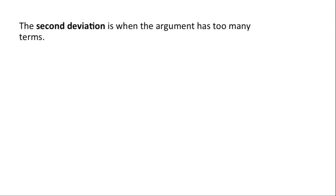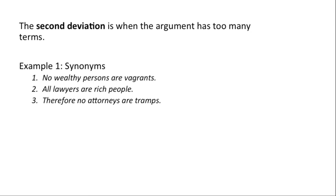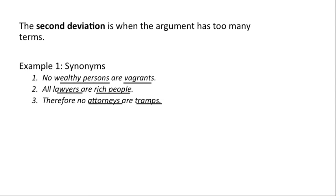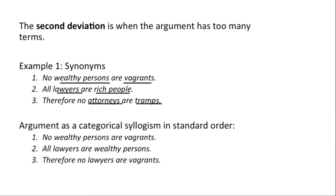The second deviation is when the argument has too many terms. A first example is if you have synonyms. In 7.2: one, no wealthy persons are vagrants; two, all lawyers are rich people; three, therefore no attorneys are tramps. We have terms for wealthy persons, rich people, vagrants, tramps, lawyers, and attorneys. But wealthy persons and rich people mean the same thing, vagrants and tramps mean the same thing, and lawyers and attorneys mean the same thing. So it's really only three different things, and we can turn it into a legitimate syllogism: no wealthy persons are vagrants; all lawyers are wealthy persons; therefore no lawyers are vagrants.